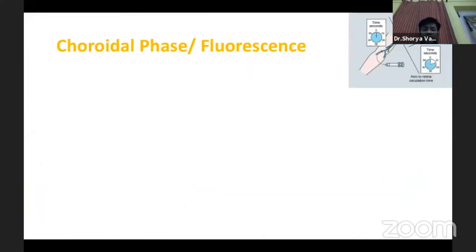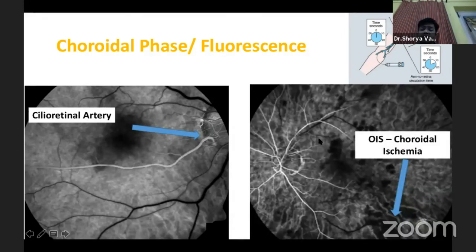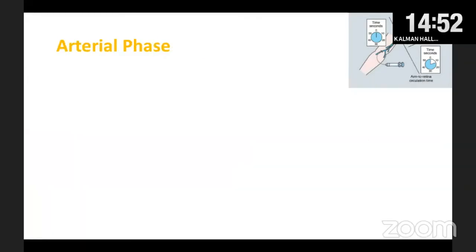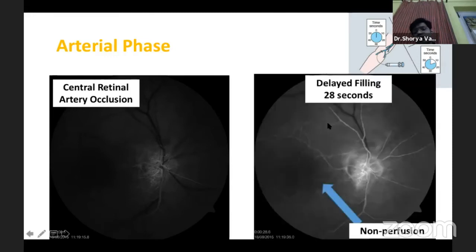The next question we ask is: which phase is it occurring in? If we need to look for a cilioretinal artery, it is best seen in the choroidal phase as it gets its supply from there. For choroidal ischemia such as in OIS, we look in the choroidal or early arterial phase. In the arterial phase, a central retinal artery occlusion can be identified by a delay in arm-to-retina time, which is normally 8 to 12 seconds. Delayed filling of arteries with non-perfusion areas posteriorly indicates a central retinal artery occlusion.